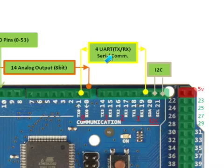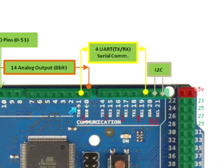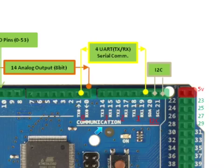The board provides 4-UART serial data communication to be configured in Arduino software. Each serial uses the following pins. Serial 0 uses pin 0 to receive data and pin 1 to transmit data. Serial 1 uses pin 19 to receive data and pin 18 to transmit data. Serial 2 uses pin 17 to receive data and pin 16 to transmit data. Serial 3 uses pin 15 to receive data and pin 14 to transmit data.